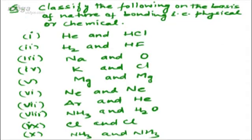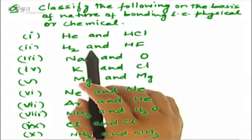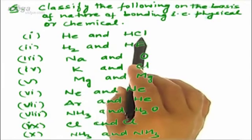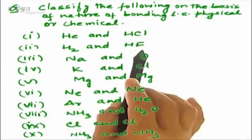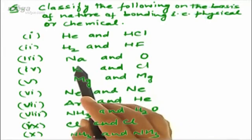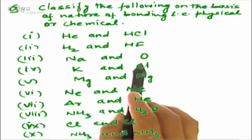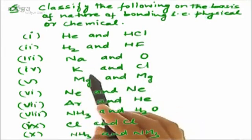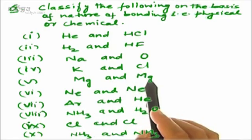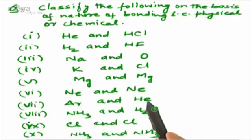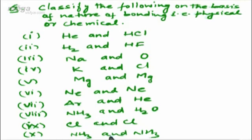Now let us take some questions. We have to classify the following on the basis of the nature of bonding — whether they will undergo physical or chemical bonding. The pairs are: helium and HCl; H₂ and HF; Na and O; potassium and chlorine; magnesium and magnesium; neon and neon; argon and helium; ammonia and water; chlorine and chlorine; and ammonia and ammonia. Try these questions — we shall deal with them in the next topic.